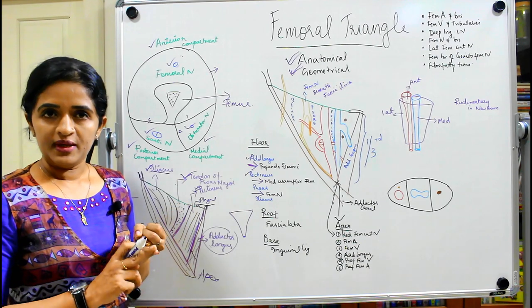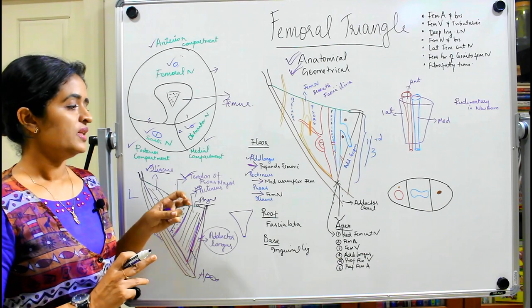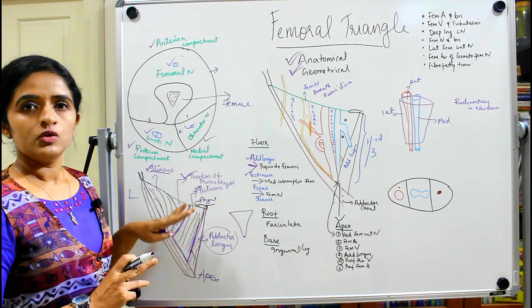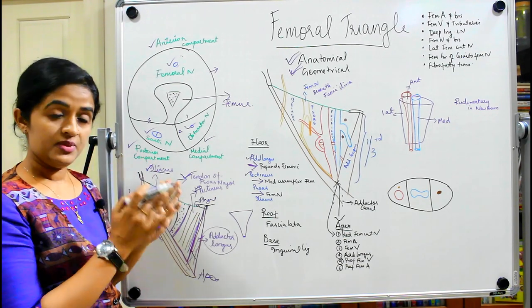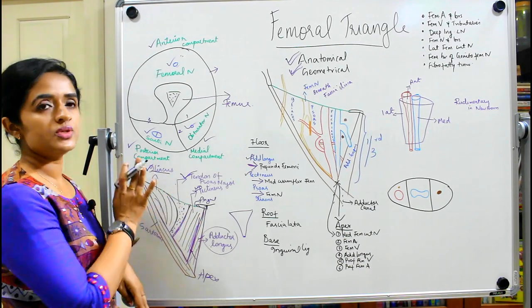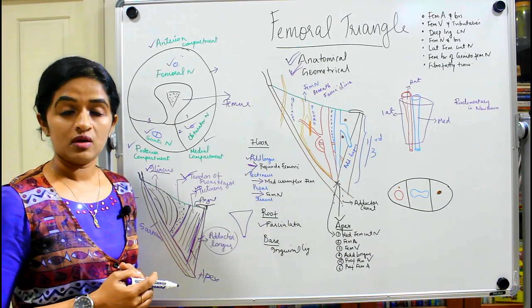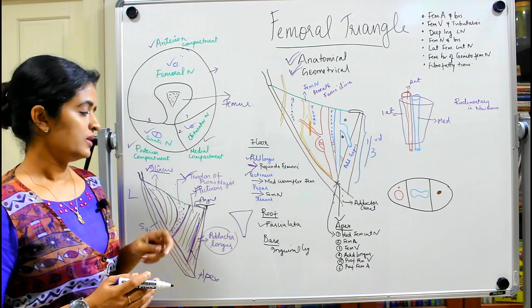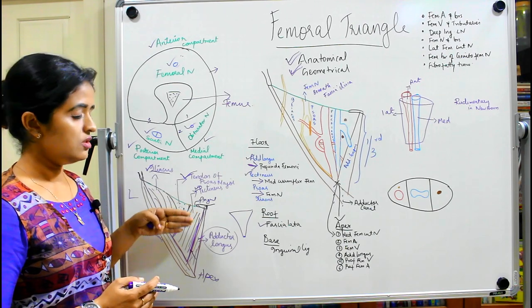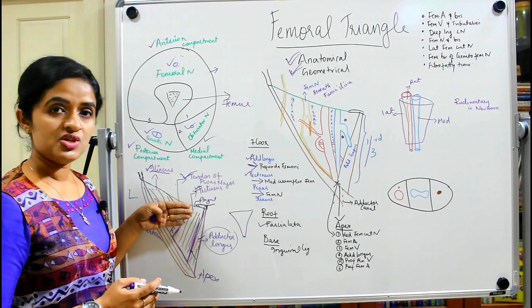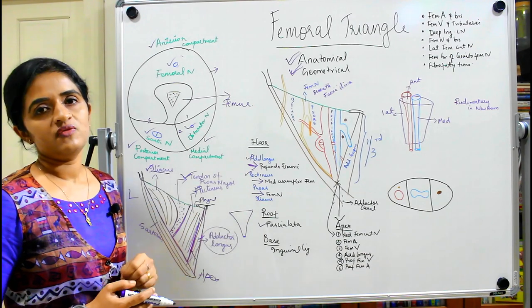The base is the inguinal ligament, we have the lateral border, medial border, apex, and floor. What about the roof? When we see the thigh we first see skin, then the superficial fascia, and closer to the femoral triangle is the deep fascia — the deep fascia of the thigh — known as fascia lata. So the roof consists of skin, superficial fascia, and fascia lata.